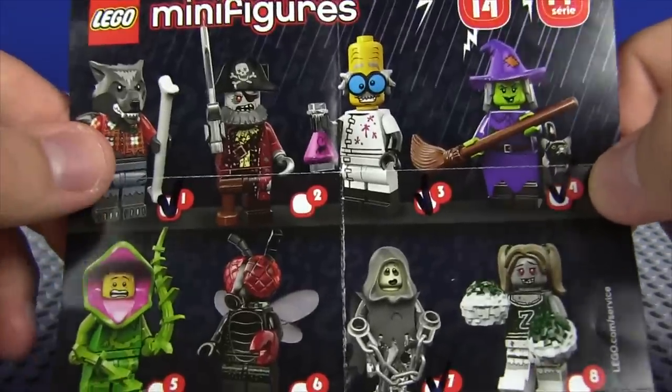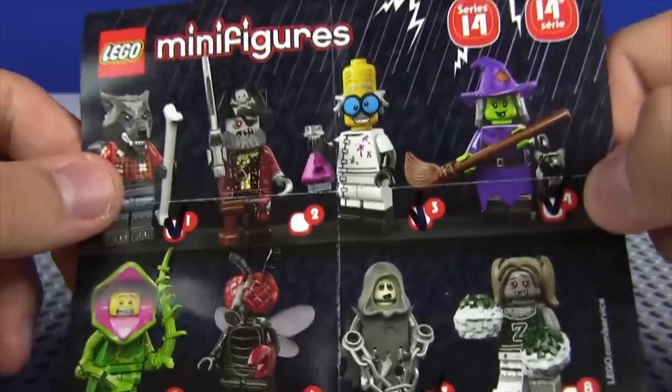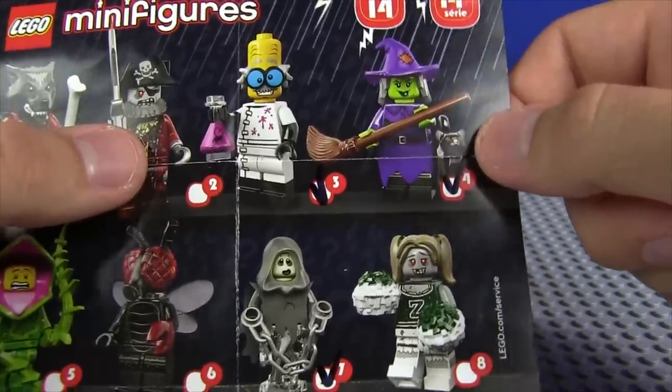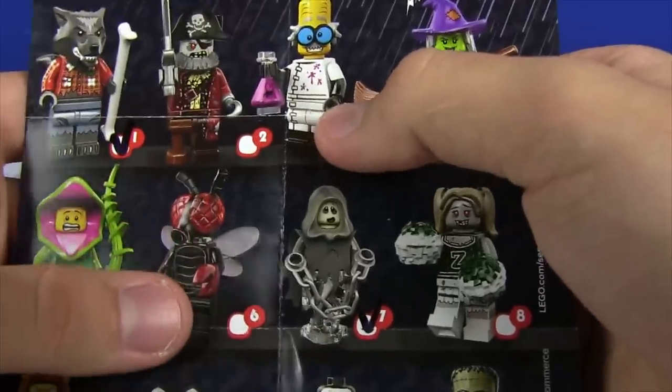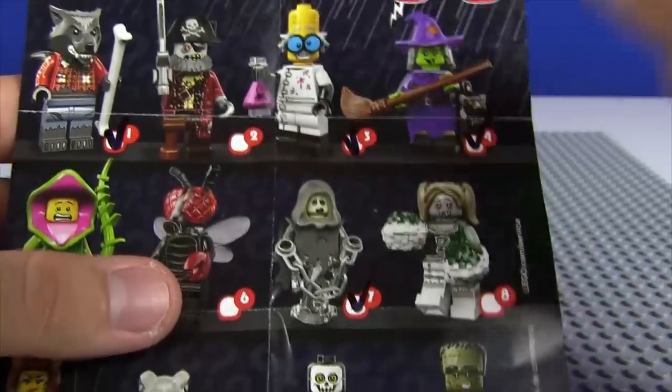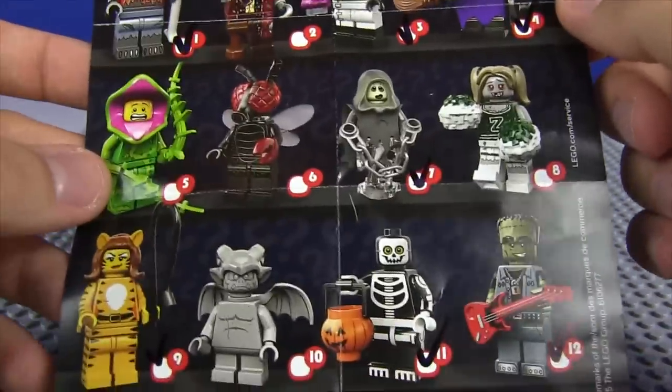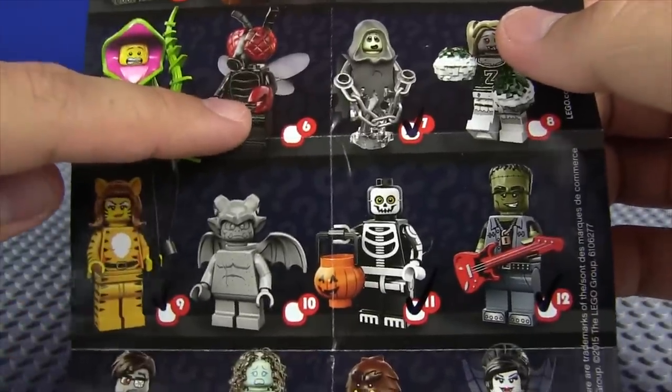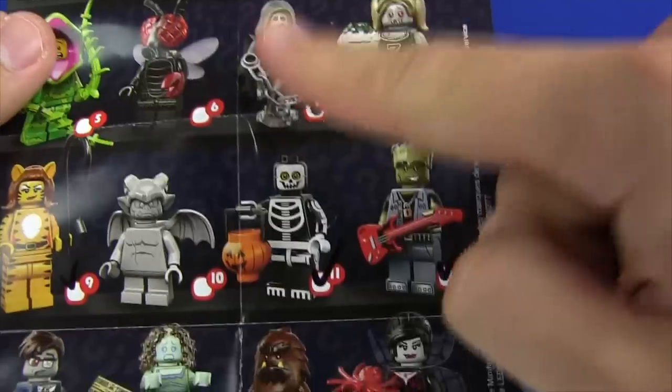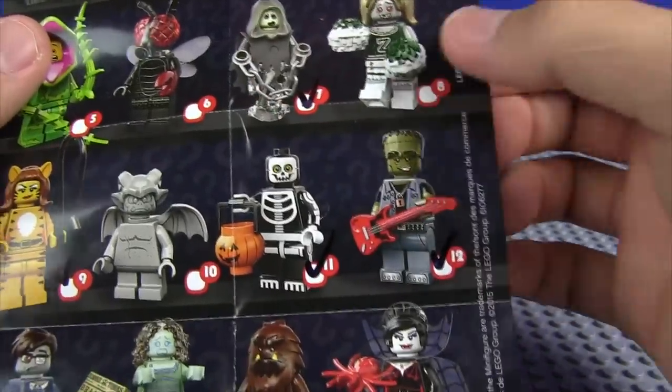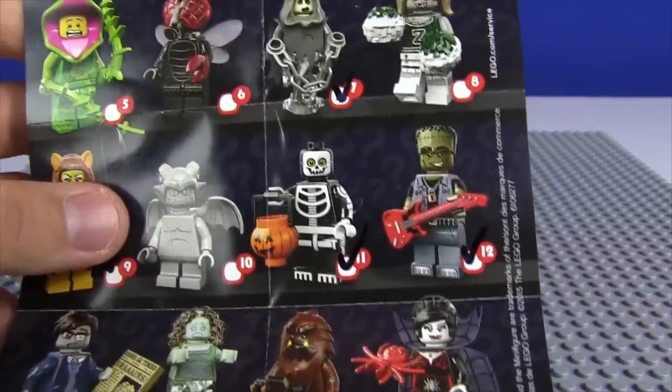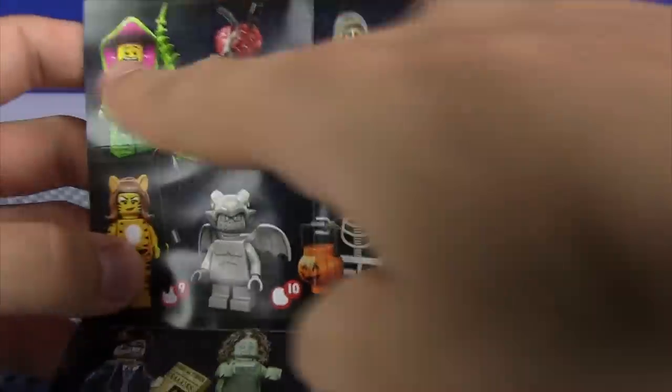So let's take a look. We've got the Wolfman right here, we already have that figure twice actually. Still missing the Captain Pirate, this zombie pirate. Then we've got the Crazy Doctor, which was a very pleasant surprise last time. We have the Witch, the Man-Eater Plant, the Fly-Man, the ghost, and the Zombie Cheerleader. All the ones that don't have a check mark are the ones that we're still missing. You can see quite a few already, we're already missing four figures.